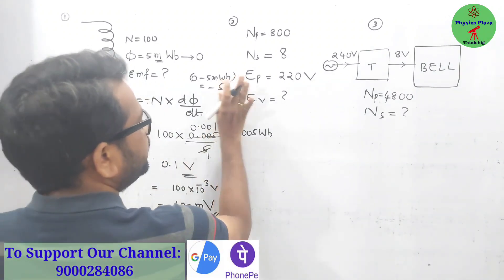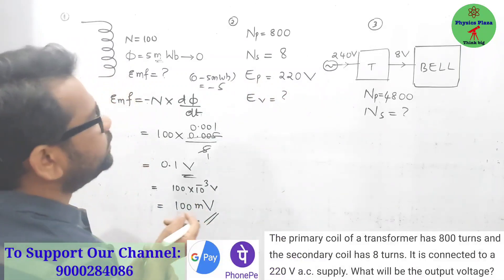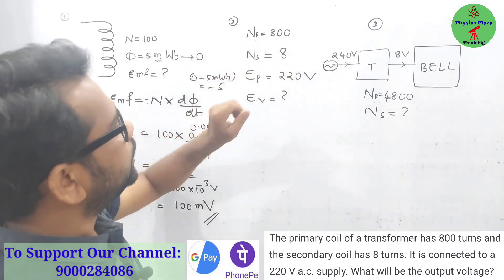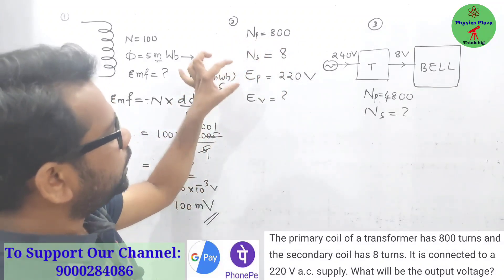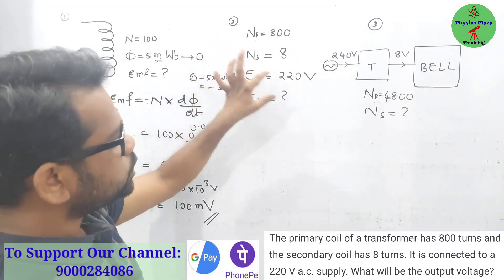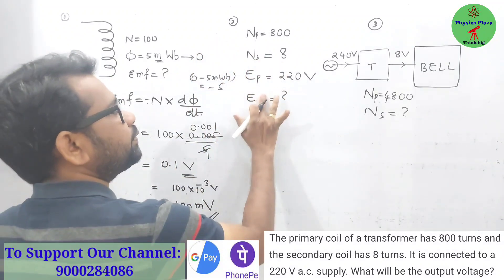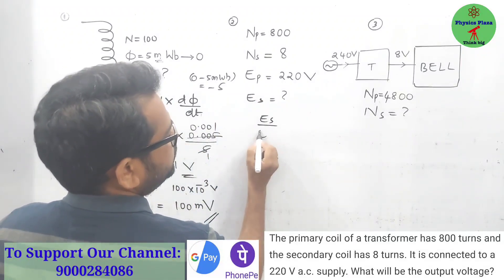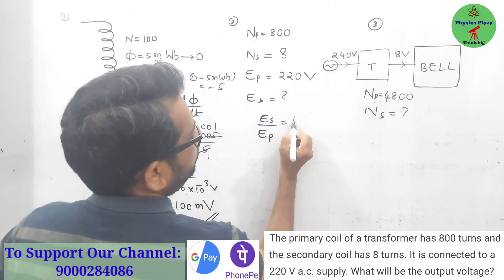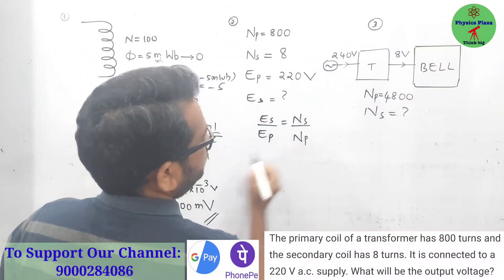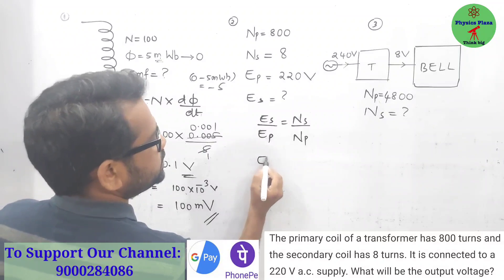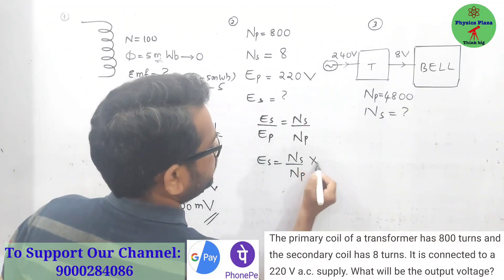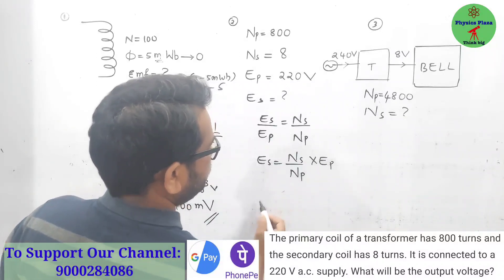Now the second one. It is given that number of turns in the primary coil is 800, number of turns in the secondary coil is 8, and EMF in the primary coil is 220 volt. They're asking us to find the EMF in the secondary coil. We know this relation: Es/Ep = Ns/Np. So Es = Ns/Np × Ep.